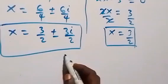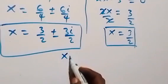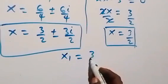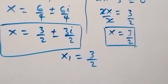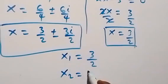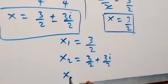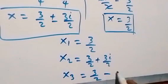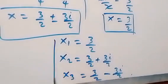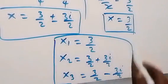Therefore the values of x are: x1 equals 3 over 2, x2 equals 3 over 2 plus 3i over 2, and x3 equals 3 over 2 minus 3i over 2. These are the three solutions to the given problem.